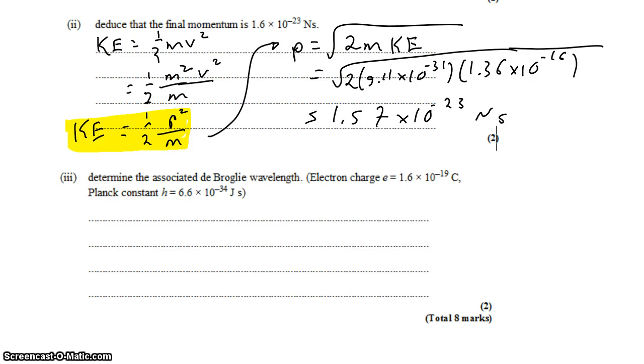Last step: determine the associated de Broglie wavelength. The de Broglie wavelength from part A is Planck's constant over the momentum we just found. So this is going to be Planck's constant, 6.6 times 10 to the negative 34, divided by 1.57 times 10 to the negative 23. Put that in your calculator, and you get about 4.19 times 10 to the negative 11 meters.